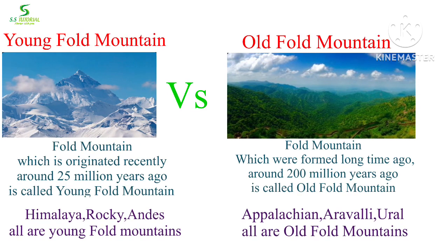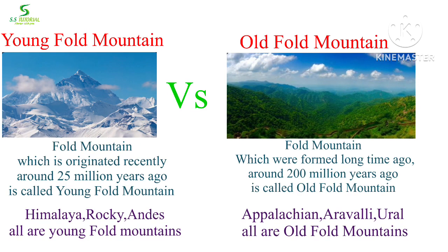Young fold mountains originated recently — their building took place about 25 million years ago. Himalaya, Rocky, and Andes are all young fold mountains. But old fold mountains were formed long time ago, about more than 200 million years ago. Aravali, Ural, and Appalachian are all examples of old fold mountains.